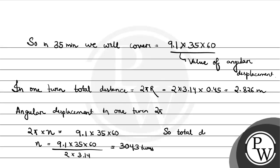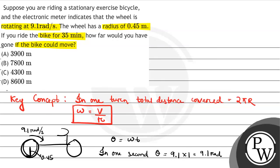equals 3043 into 2.826, which equals 8600 meters. So our option D is our correct answer. Hope you understood well, best of luck, thank you.